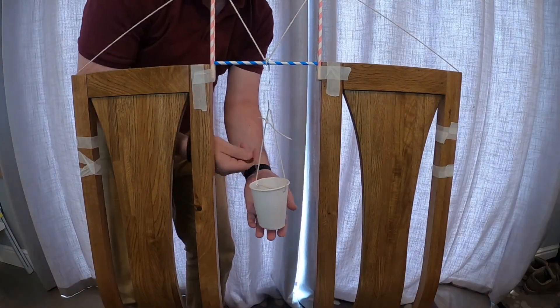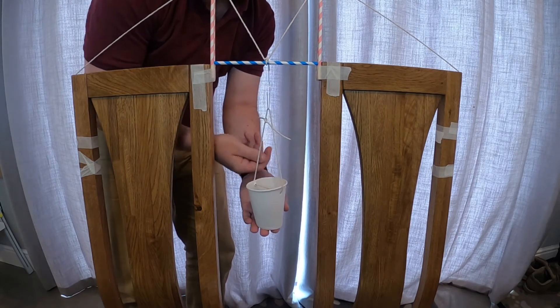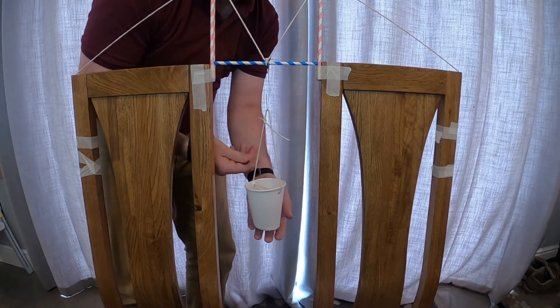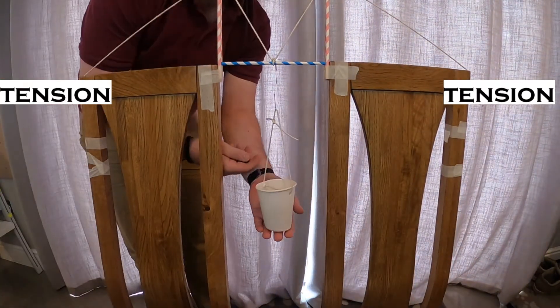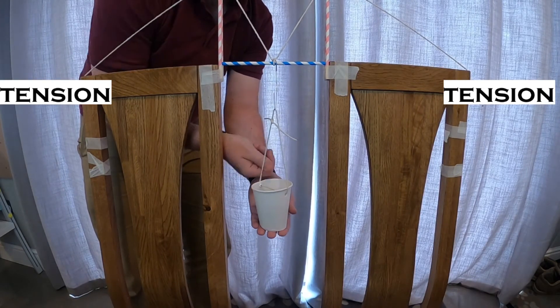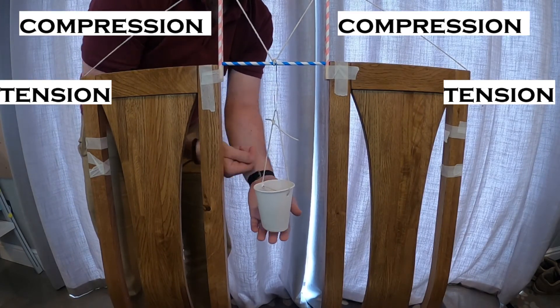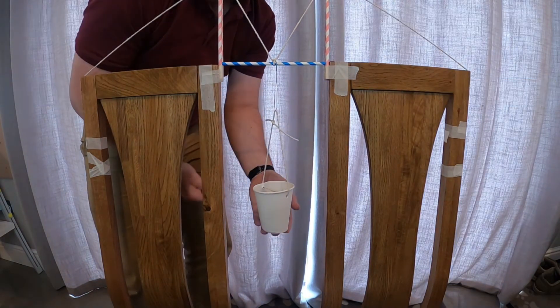With the suspension bridge, what is happening is these forces of compression and tension are being spread out around the rest of the structure. The string ends up getting put in tension, and this supports the weight being pulled down. The string is pressing down on the towers, so they are taking that force of compression. This way, the beam of the bridge is not having to deal with all the forces on its own, unlike with the beam bridge.